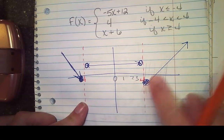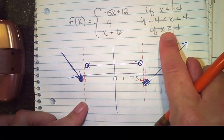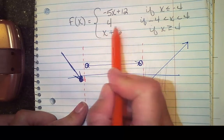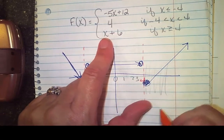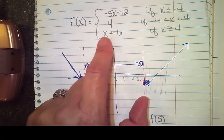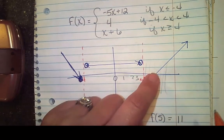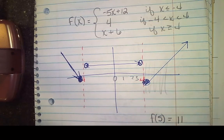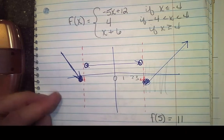5 is in this territory over here, which means it belongs to the last piece we drew, or anywhere where 5 is bigger than 4. So it belongs to that function. All we have to do is substitute in. f of 5 belongs to only this part, and 5 plus 6 is 11. So the point (5, 11) is on this part of the piecewise function.